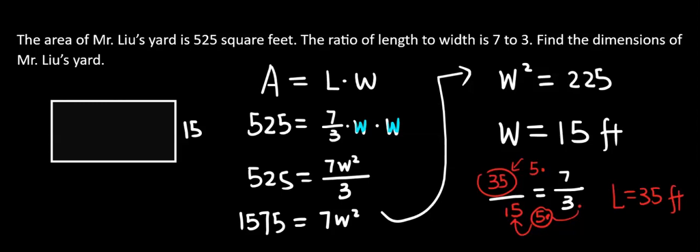Now, we got the dimensions width and length. When I put a highlight there, the length is gone. Let's rewrite it. Length is 35 feet. That's it. Happy learning.